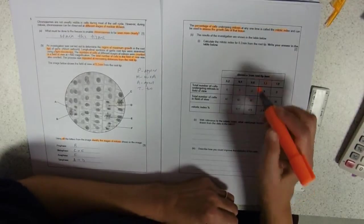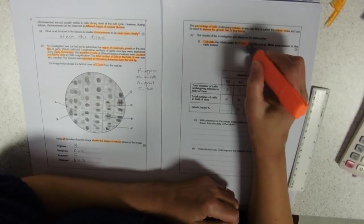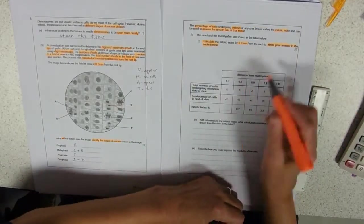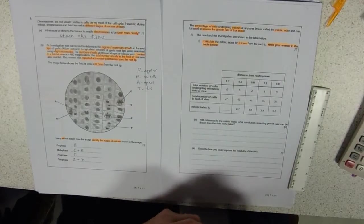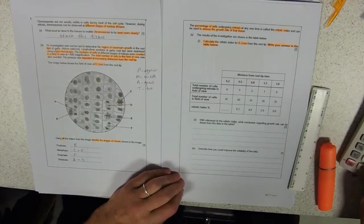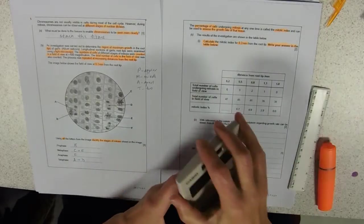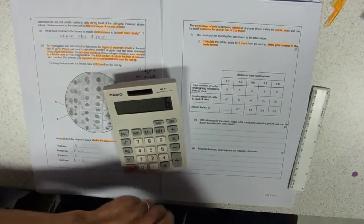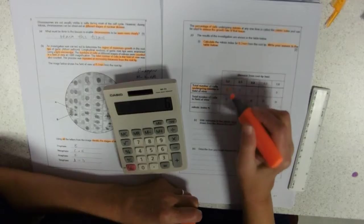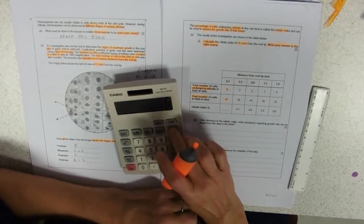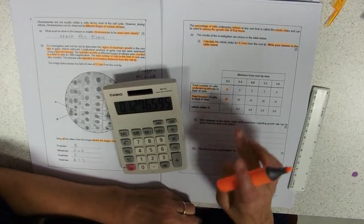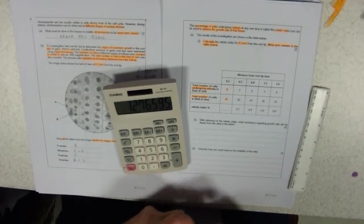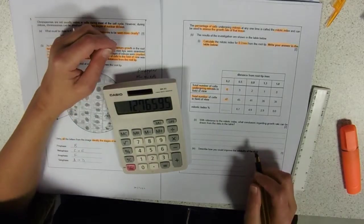So, results of the investigation. And we've got to do a calculation. Calculate the mitotic index for 0.2mm from the root tip. And then it tells me in bold, write your answer in the table below. So that means I can use this space to calculate. So, percentage of cells undergoing mitosis. I'm going to need my calculator. I've got six cells undergoing mitosis. Six divided by 47 equals, and it's a percentage. So, we're going times 100. So, I've got 12.76595. That's a big long number.